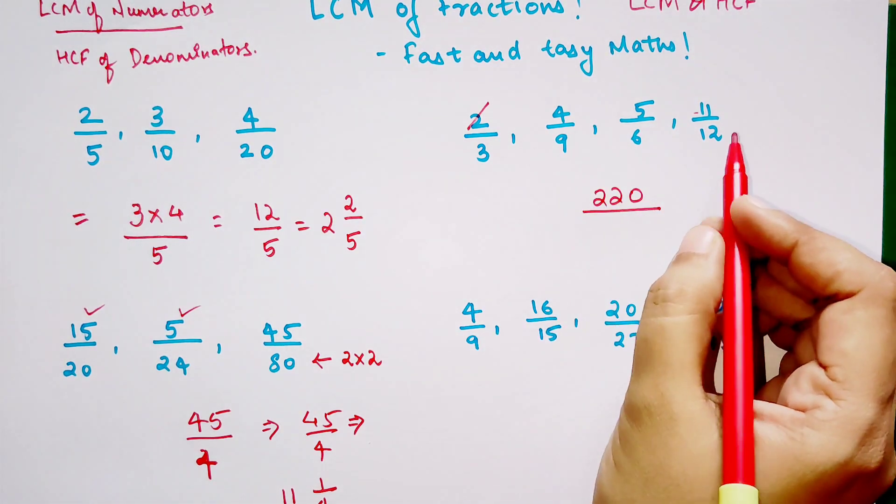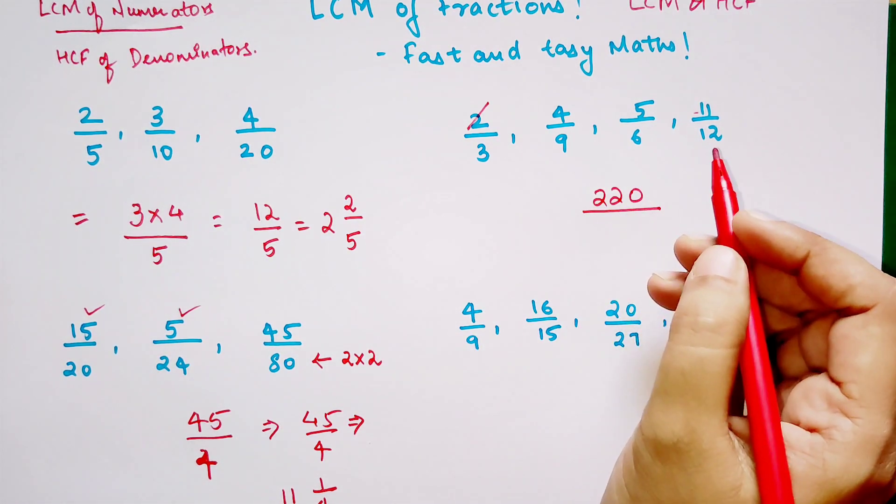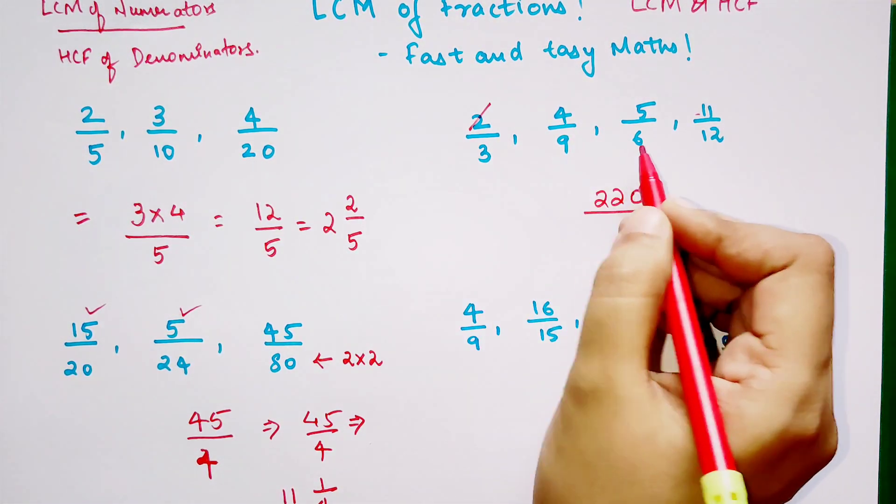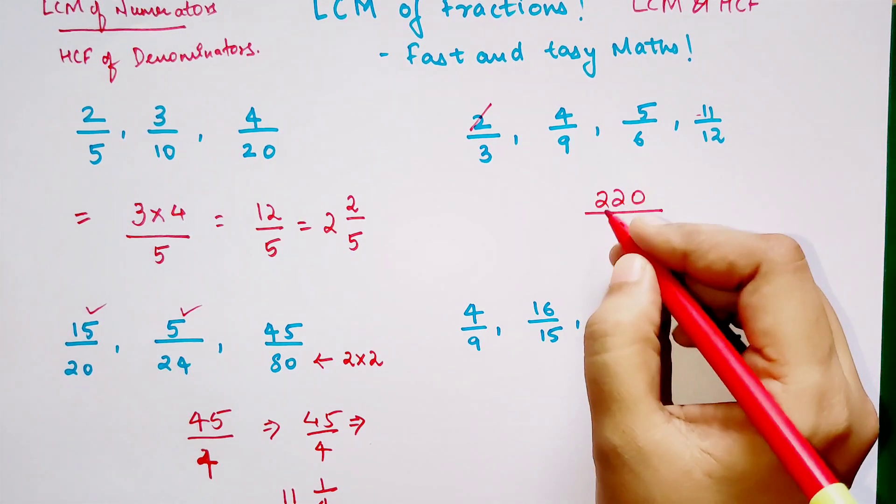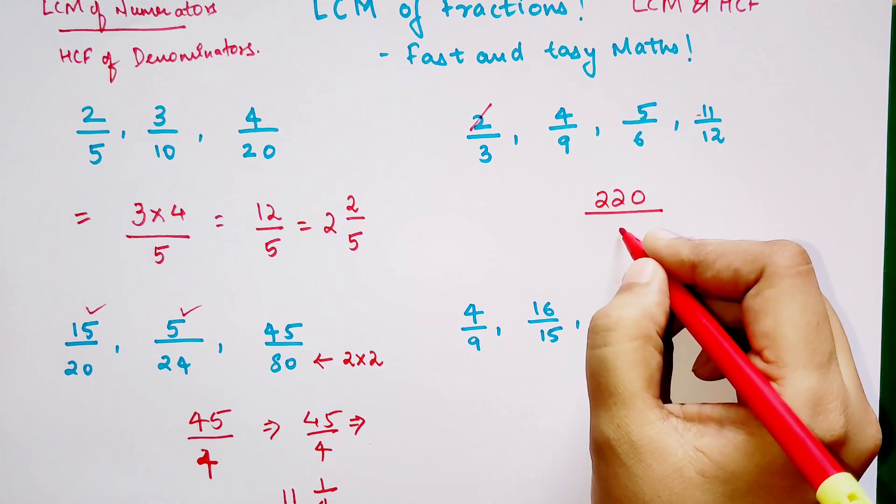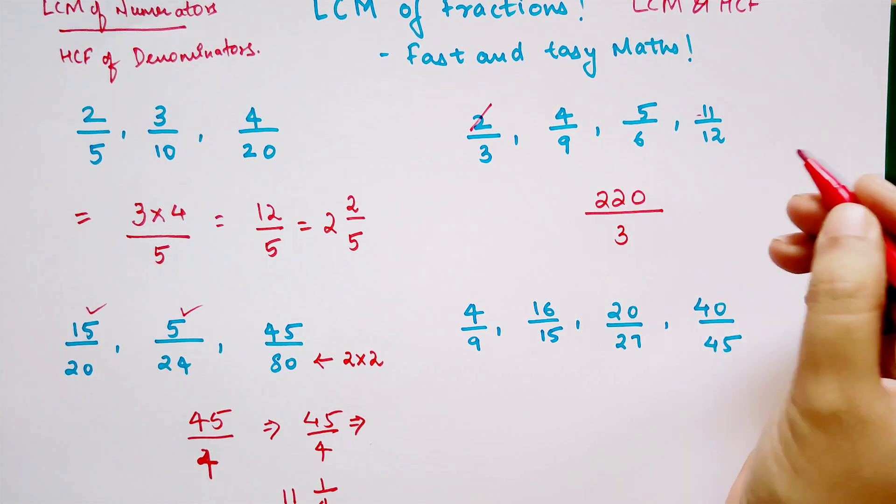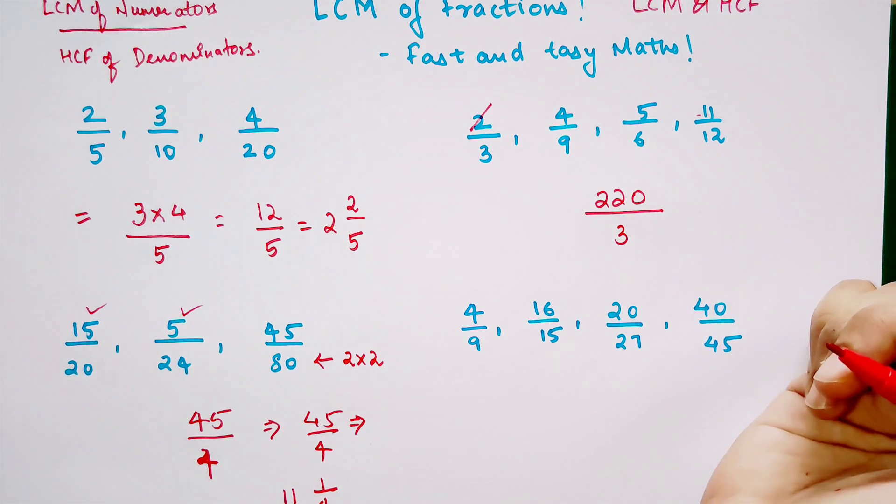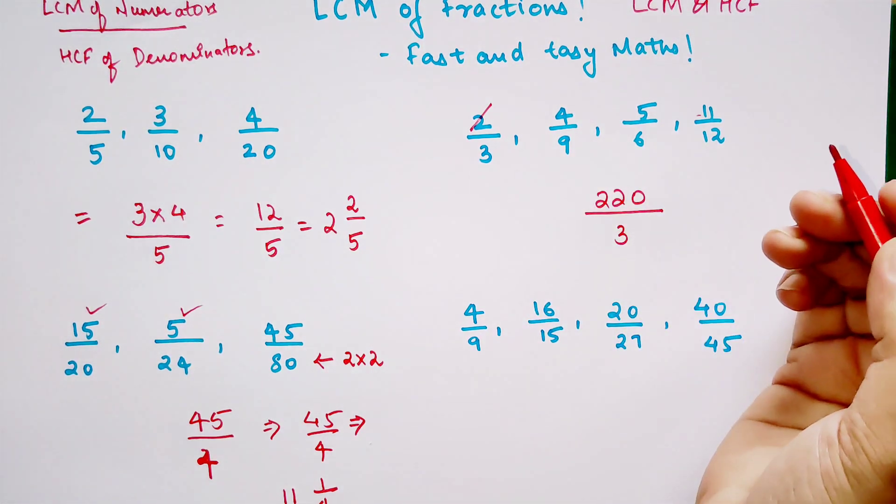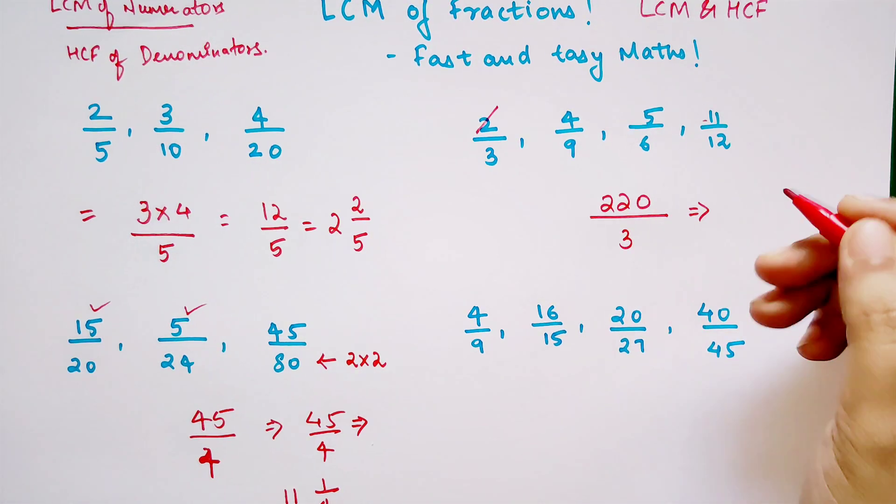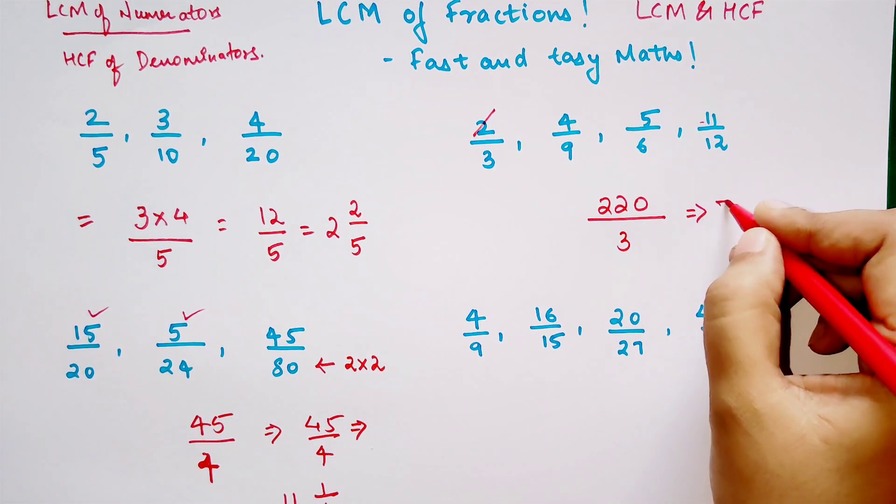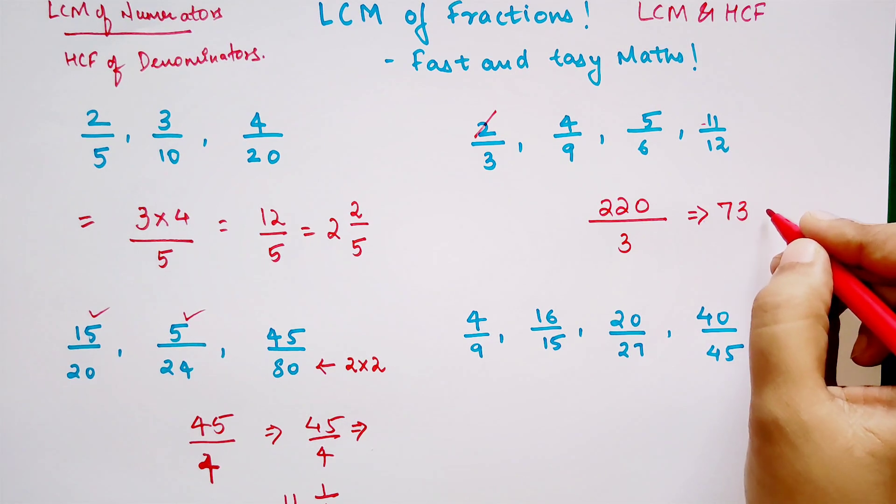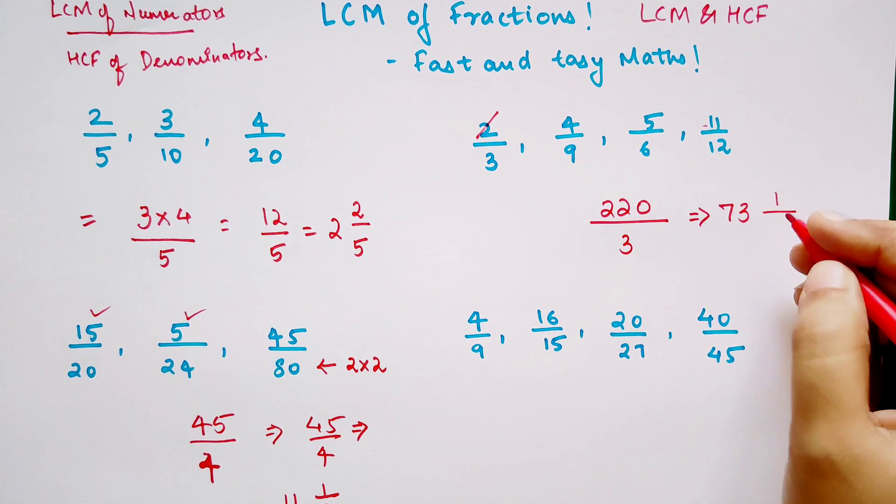Now in the denominators, what is the common factor? We are trying to find the HCF, right? So the common factor of 3, 9, 6, and 12 we can directly say that it is 3. We cannot have 6 because 9 doesn't get cancelled completely by 6, or 9 doesn't come in 6's table. So here also my final answer would be 73 and 1 upon 3.